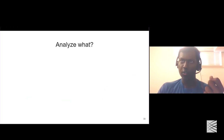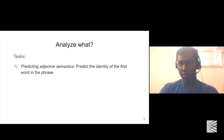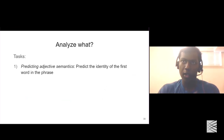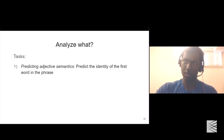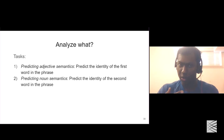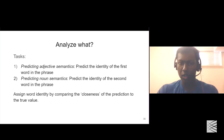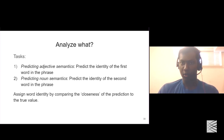The paper looks at two tasks: first, whether we can predict the adjective the participant is looking at — predict the identity of the first word in a phrase — from the brain imaging data. And second, the same for the noun, the second word. We then assign the adjective based on the predictions obtained from the model.